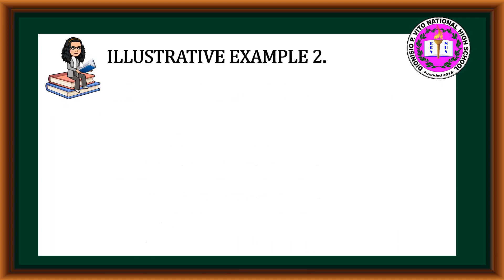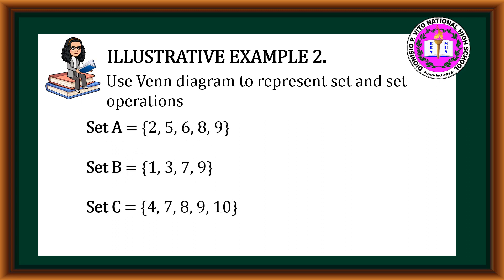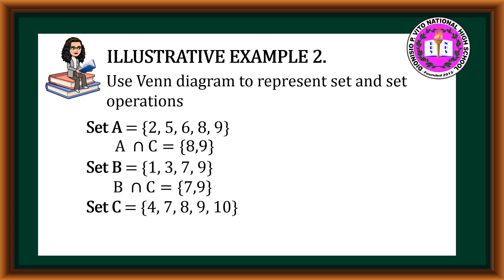Moving on to the second illustrative example, we're going to use Venn Diagram to represent sets and set operations. Set A is equal to 2, 5, 6, 8, and 9. Set B is equal to 1, 3, 7, and 9. And Set C is equal to 4, 7, 8, 9, and 10. The intersection of Set A and Set C is equal to 8 and 9. The intersection of Set B and Set C is equal to 7 and 9. And the intersection of A, B, and C is equal to 9.